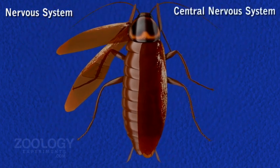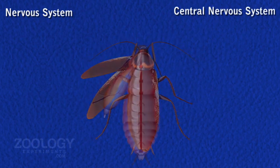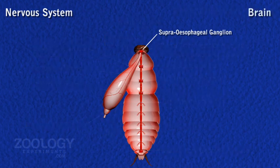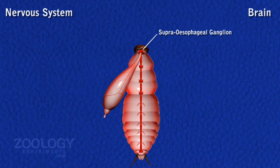Central Nervous System consists of brain and ventral nerve cord with its ganglia. Brain, or supra-esophageal ganglion, is a large bilobed mass located in the head above the esophagus. It represents three pairs of ganglia of the head region fused together. It is divided into three parts: protocerebrum, deuterocerebrum, and tritocerebrum.